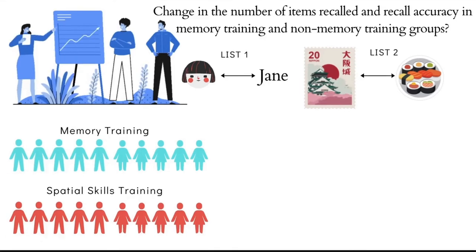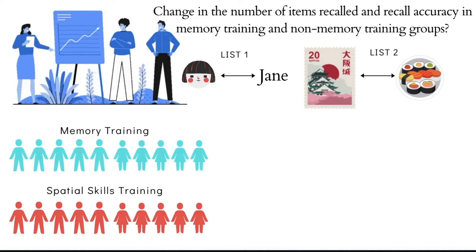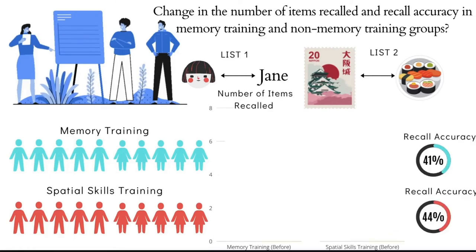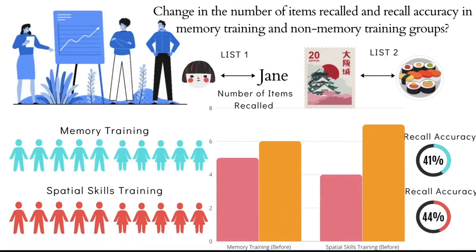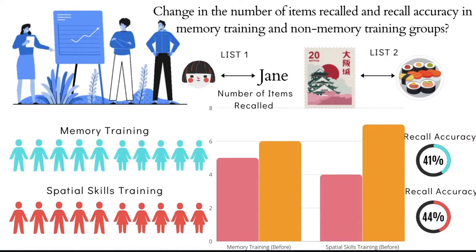Let's look at some mock data that has been generated for the recall tests across the two groups. Remember that the participants in each group have not been subjected to any active training yet, and therefore we are getting a pre-training measure of performance in the recall test. We are interested in two key measures: the number of items recalled and the recall accuracy performance. The mock data shows that the performance of each group does not differ much in either recall accuracy or items recalled.